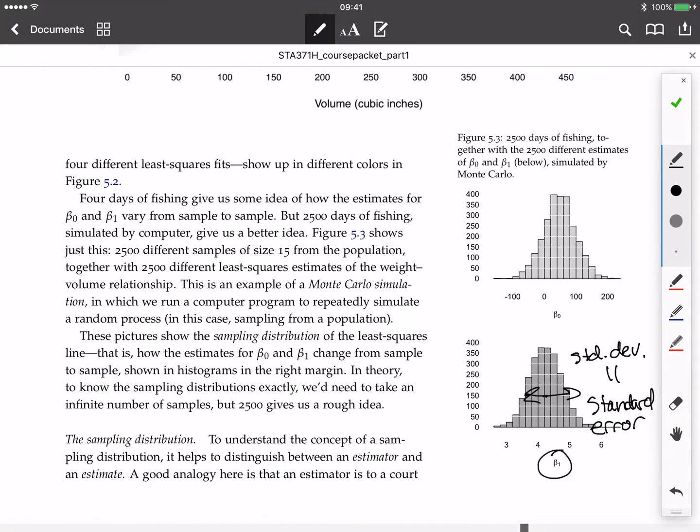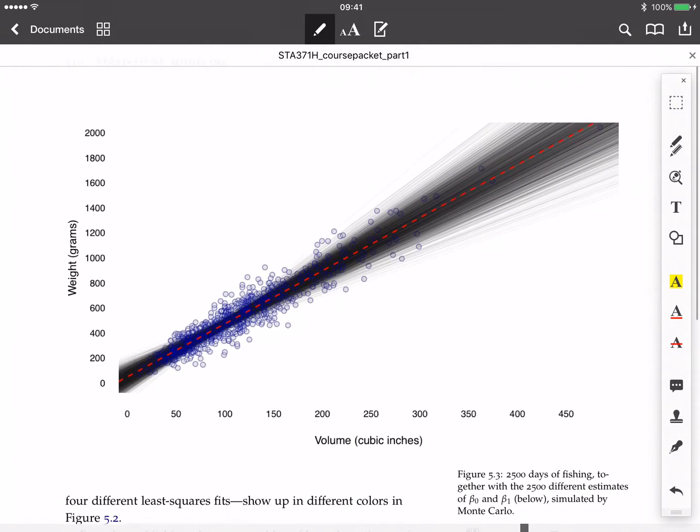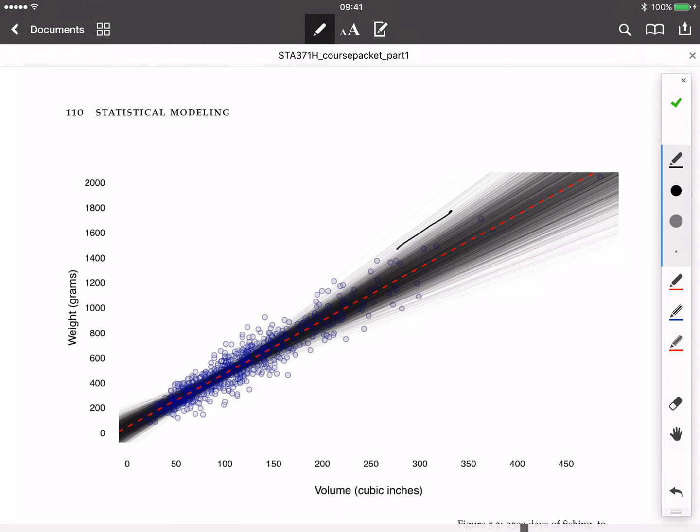So again, just to be super specific here, if we go back up to this picture, this histogram right here represents a histogram of the slopes of all 1,000 of these different regression lines right here. Or I guess there's 2,500, not 1,000.